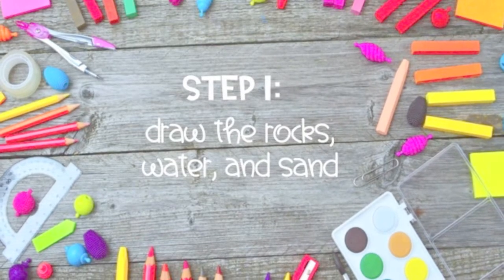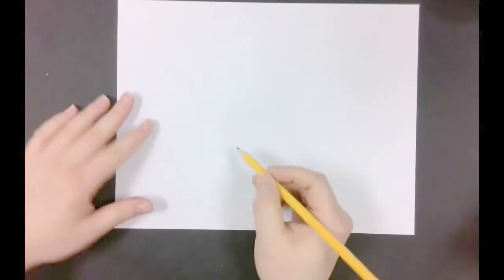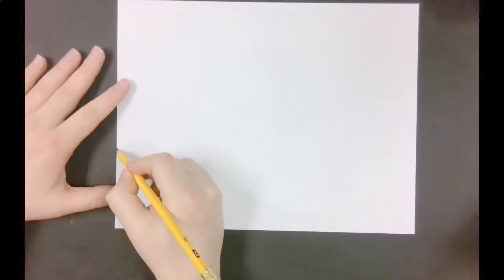To overlap we need a foreground, middle ground, and background. Starting with a pencil and your piece of paper the long way, we're going to draw two diagonal lines to be rocks.